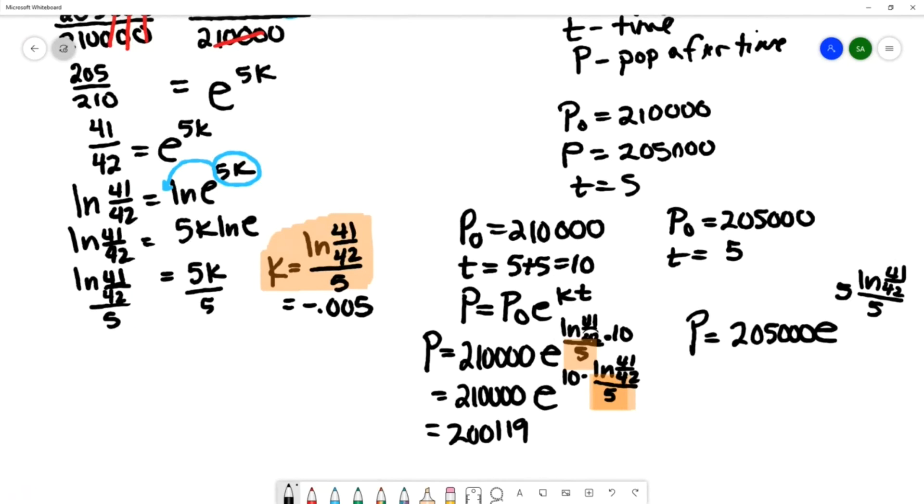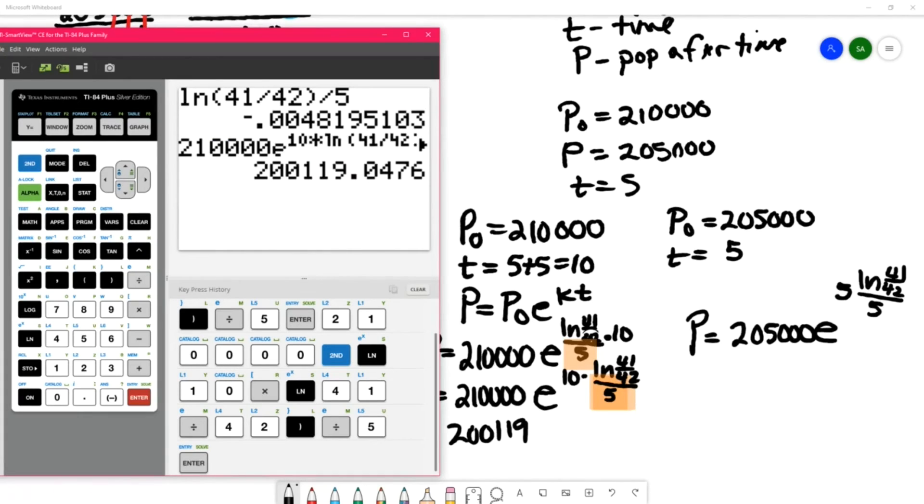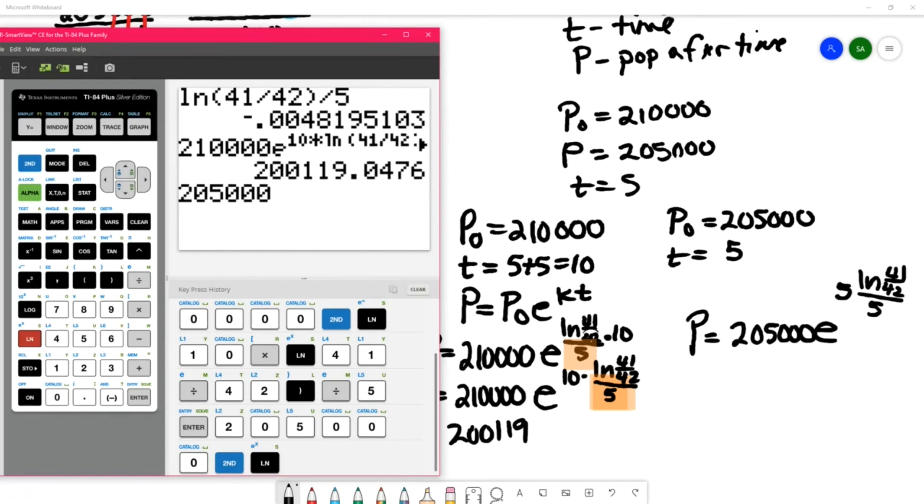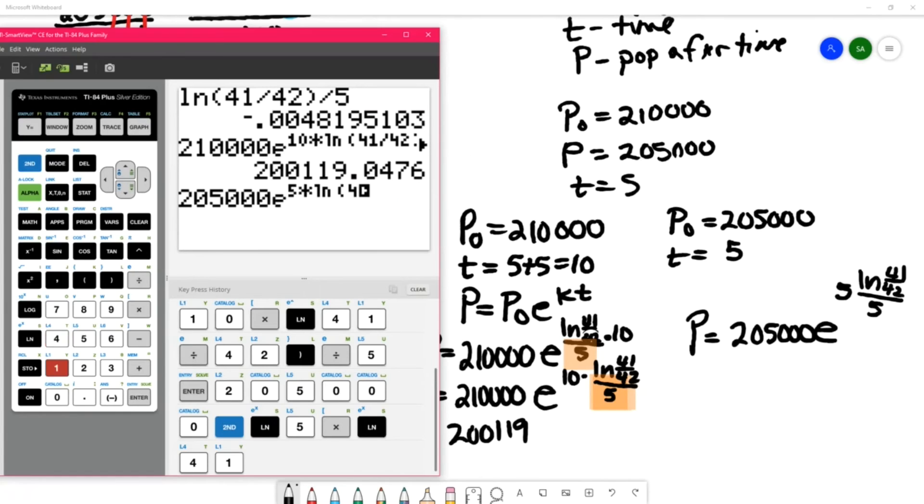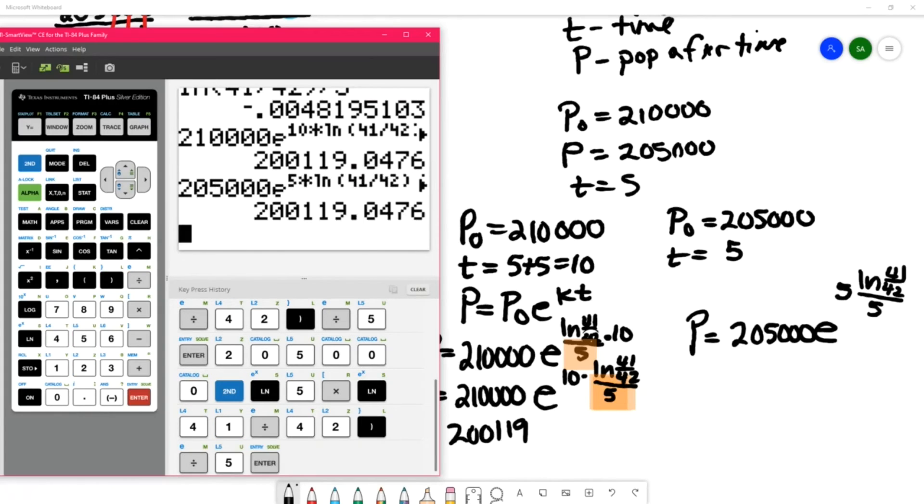We can do the other one just to confirm that it will come out the same. So 205,000 e^(5 × ln(41/42)/5) gets me the same 200,119.